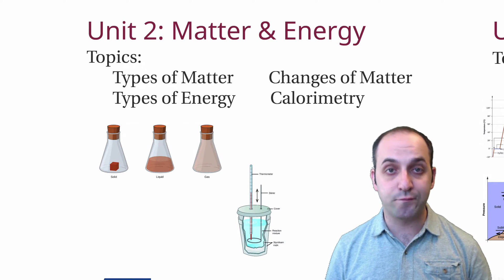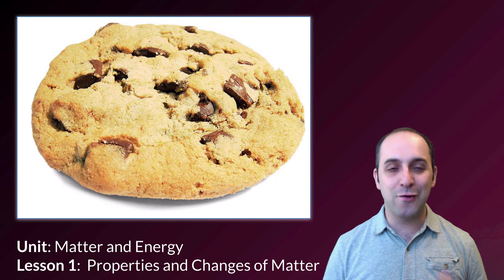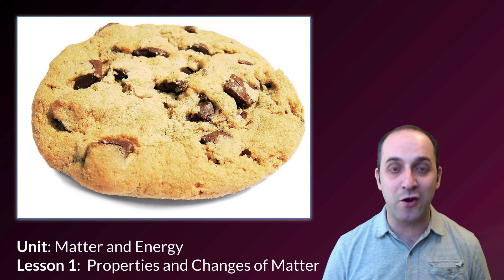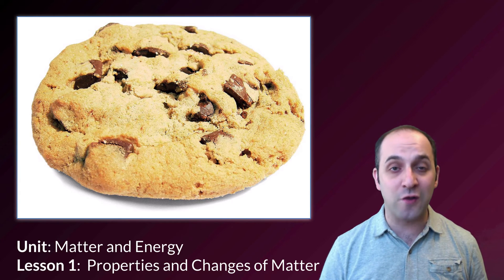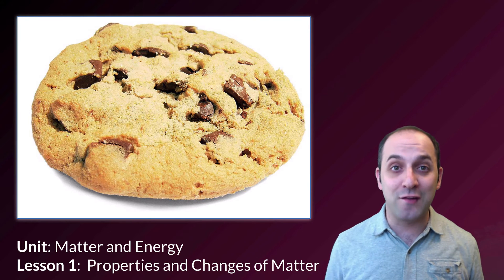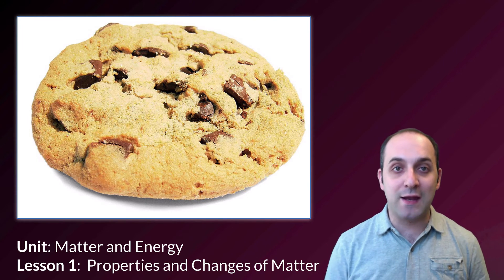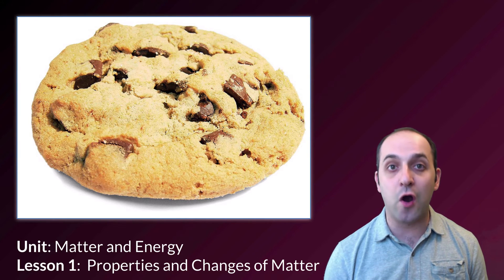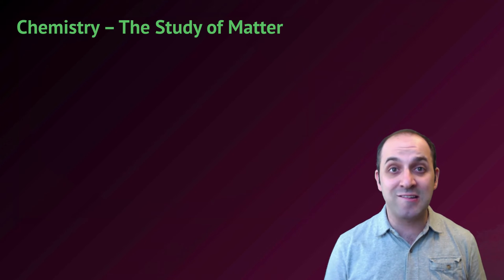You may be wondering why there's a cookie on the screen. In our first discussion we're really going to be talking about the properties and changes of matter, and a cookie is a good symbol to get us started because a cookie is made of matter — matter that's recently been through a series of changes when it got cooked. It's a helpful notion to keep in mind as we talk about the different types of matter and the changes that matter can undergo.